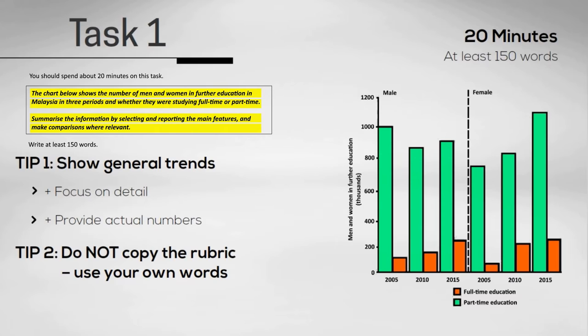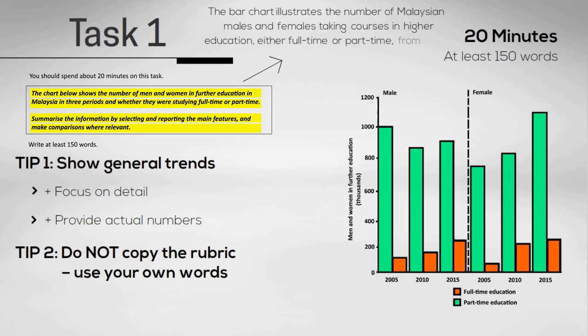Change the vocabulary and the grammar of the rubric so that it is different from the original. For example, the bar chart illustrates the number of Malaysian males and females taking courses in higher education, either full-time or part-time, from 2005 to 2015.